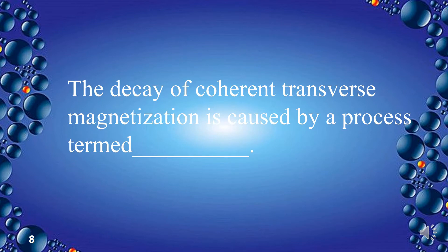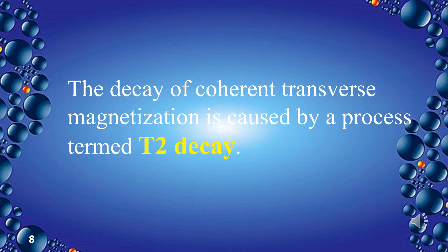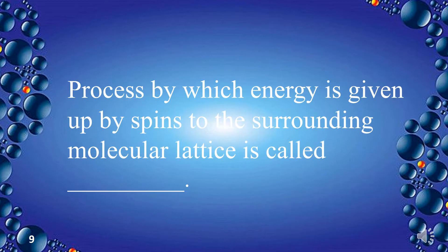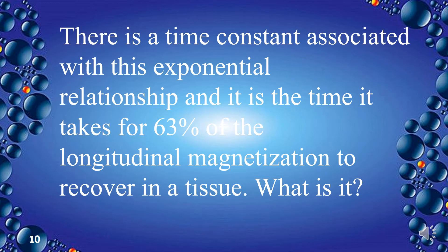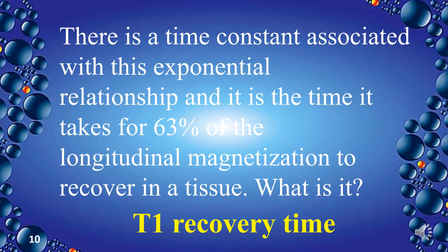What is the process that causes the decay of coherent transverse magnetization? This process is called T2 decay. The process by which energy is given up by spins to the surrounding molecular lattice is called spin lattice energy transfer. The time constant associated with this exponential relationship — the time it takes for 63% of the longitudinal magnetization to recover in a tissue — is T1 recovery time.